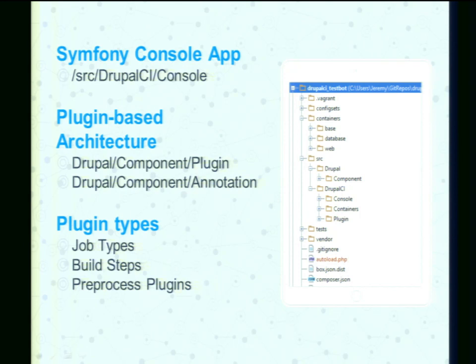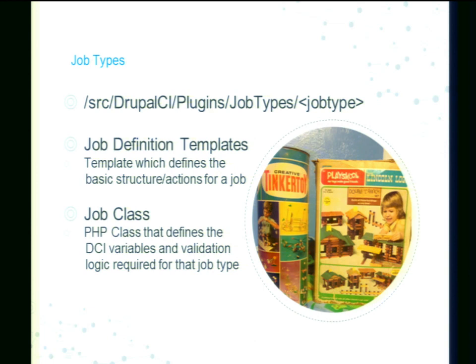It's a plugin-based architecture with three main super-categories of plugins. We've got job types — a job type might be SimpleTest, might be PHPUnit, might be create an interdiff. We've got build steps, which are the incremental steps that happen during a given job. And we have a number of preprocessor plugins. When we talk about job types, the job type is the large category over what we're doing. If we're doing a Behat test, we'll have a Behat job type. If we're doing a Selenium test, we'll probably have a Selenium job type. What those types consist of is a job definition template, which defines the things I need to do, and a class that defines the different variables I need, the default values for those variables, and any custom logic that I need.